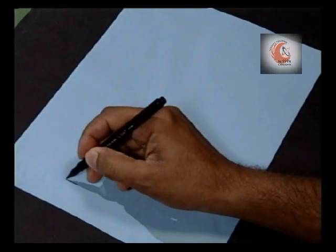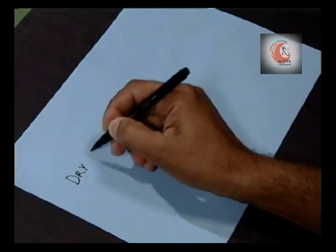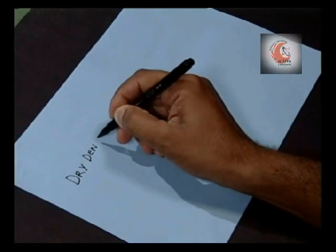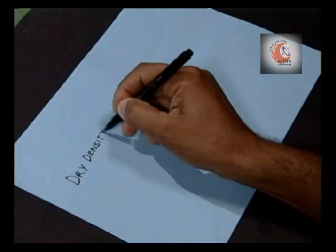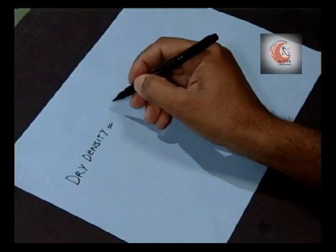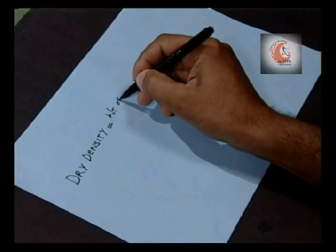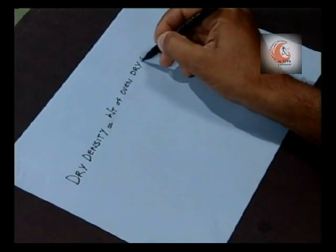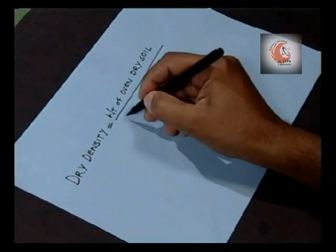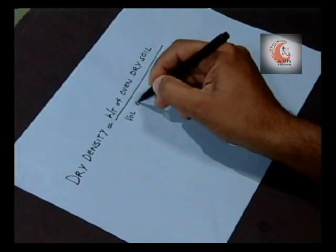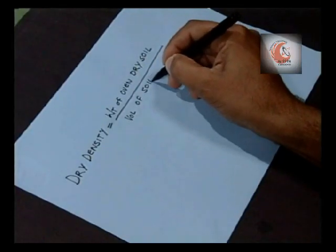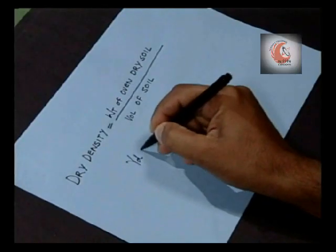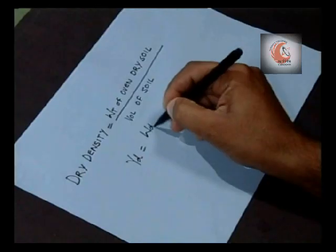Dry density of a soil is the ratio of weight of oven dry soil per unit volume of the soil. That is, dry density is equal to weight of oven dry soil divided by volume of soil, or we can write gamma D is equal to WD over V.